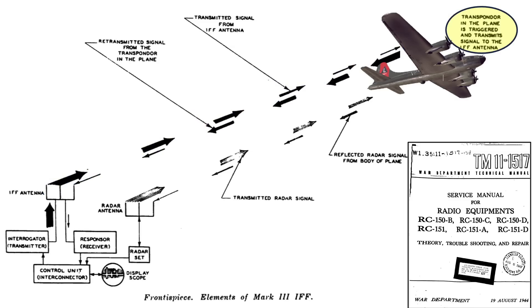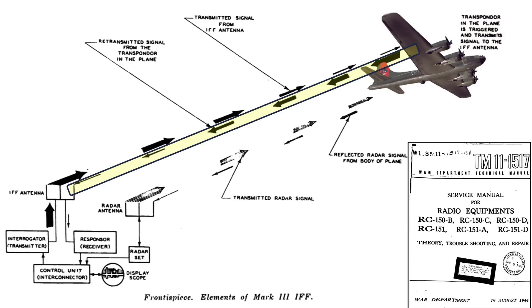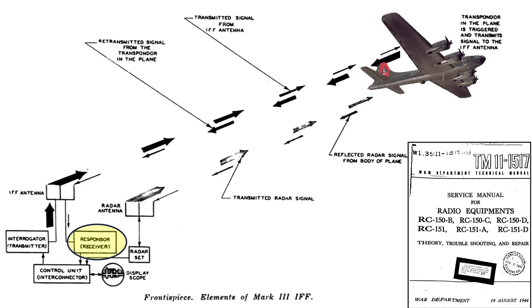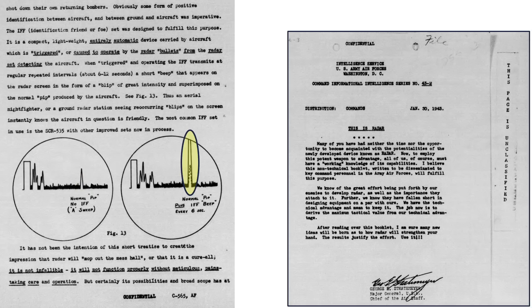The plane's IFF transponder receives the ground IFF challenge signal and automatically triggers a preset coded response reply. This coded signal is picked up and evaluated for authenticity by the ground IFF responder receiver antenna — the signal is usually stronger than the radar return. The control unit's interconnector relays the beep return to the radar scope, where the IFF return beep is superimposed on the radar return's PIP. The radar scope shows the echo pulse PIP amplitude from radar alone versus the pulse from an IFF-equipped aircraft, where the amplitude momentarily peaks every 6 seconds from the added IFF beep signal.